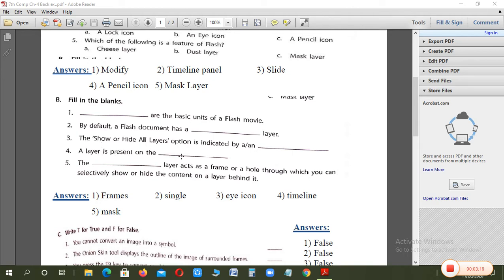A layer is present on the blank. Where is the layer present? In the timeline. In the timeline there are layers, frames, key frames, and onion skin tools.